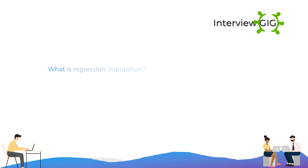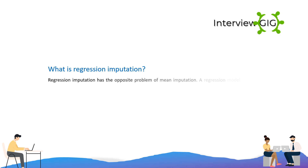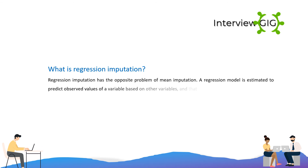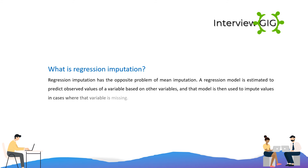What is regression imputation? Regression imputation has the opposite problem of mean imputation. A regression model is estimated to predict observed values of a variable based on other variables, and that model is then used to impute values in cases where that variable is missing.